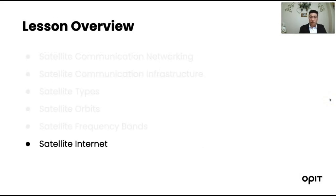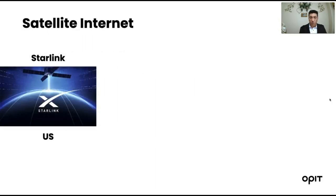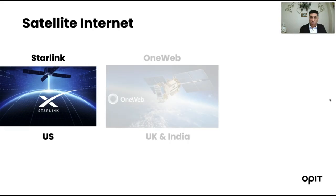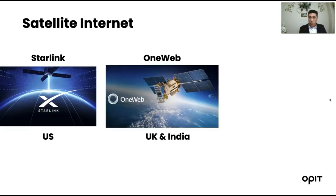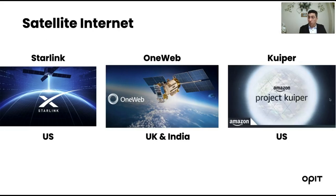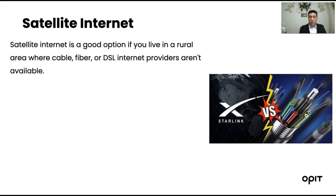Satellite internet is considered one of the most interesting technologies today. The three major companies are Starlink, based in the United States; OneWeb, a joint venture between the United Kingdom and India; and Project Kuiper from Amazon, also based in the United States. These are the major internet service providers in this space, offering technology far more advanced than previous satellite internet providers. Satellite internet is a good option if you live in a rural area where cable, fiber, or DSL providers are not available.